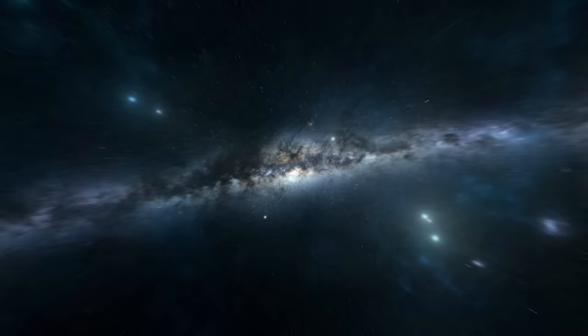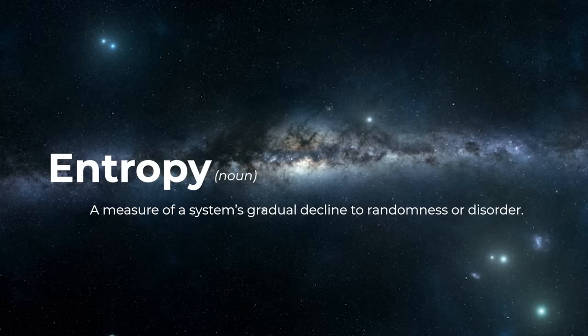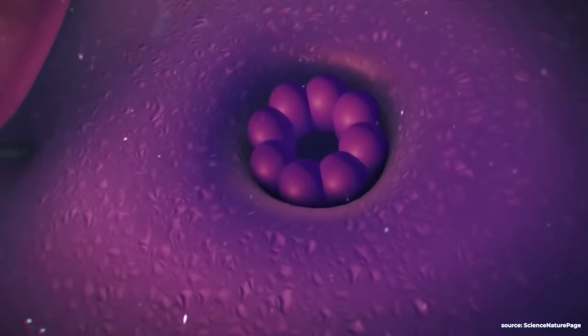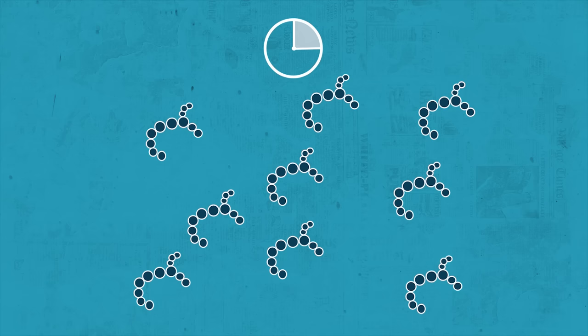Entropy, or the second law of thermodynamics, states that all objects in the universe are governed by moving from order to disorder, increasing in randomness over time, gradually losing energy until the ultimate heat death of the universe. The complexity of life stands in stark contrast to this theory. If you are given a sequence of events and don't know where time is, you actually have to guess where the start and end is to know whether entropy has increased or decreased. There's something rather biased about the way the user interacts with universal entropy.